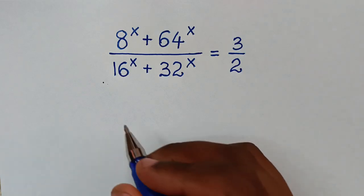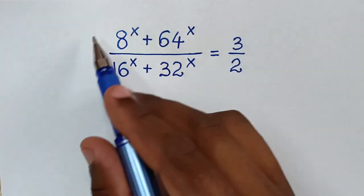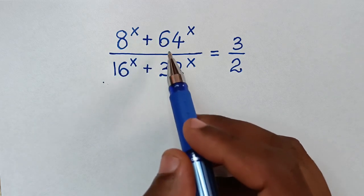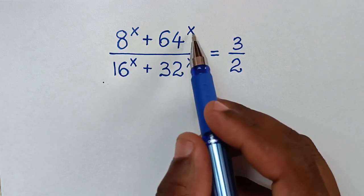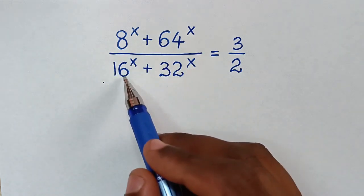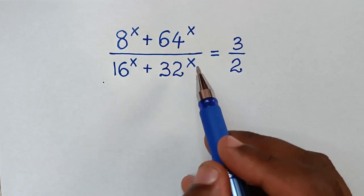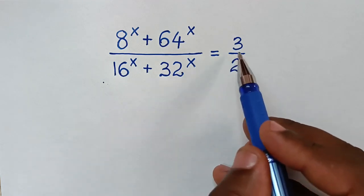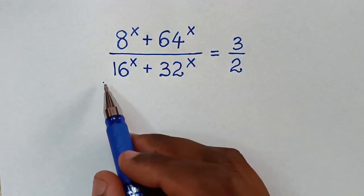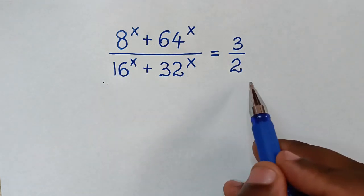Hello, you are welcome to solve this math problem which is: (8^x + 64^x) / (16^x + 32^x) = 3/2. We need to find the values of x from this equation.